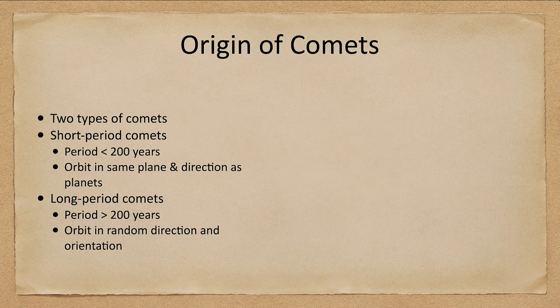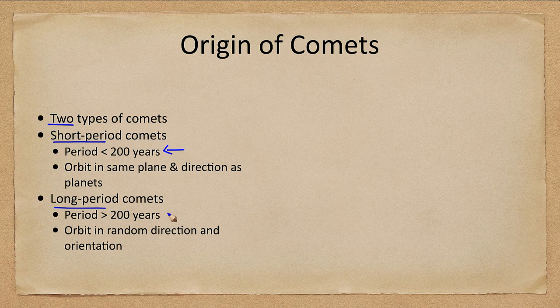Where do comets come from? There are two types: short-period comets, defined as having periods less than 200 years, and long-period comets, with periods more than 200 years — that is just a rough cutoff.